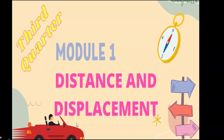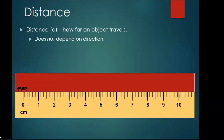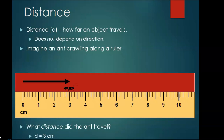Hello students, welcome to our third quarter module one. The title is Distance and Displacement. Distance tells how far an object travels and does not depend on direction. Imagine an ant crawling along a ruler — what distance did the ant travel? Three centimeters.